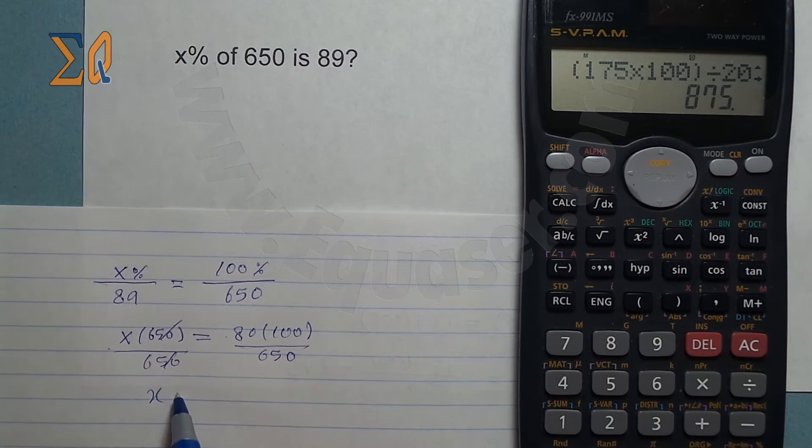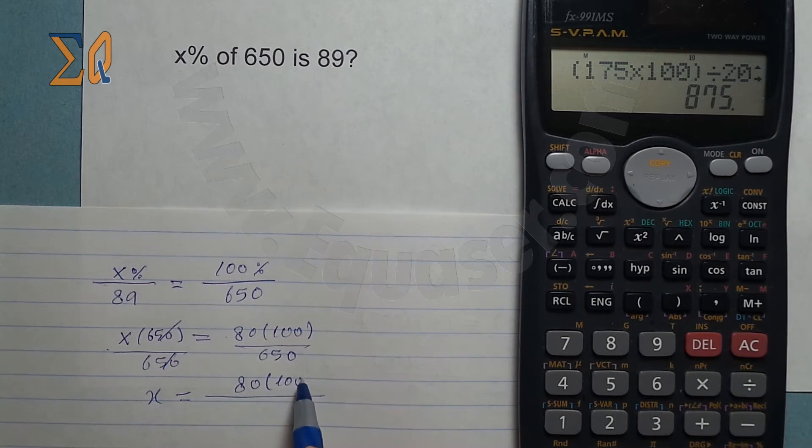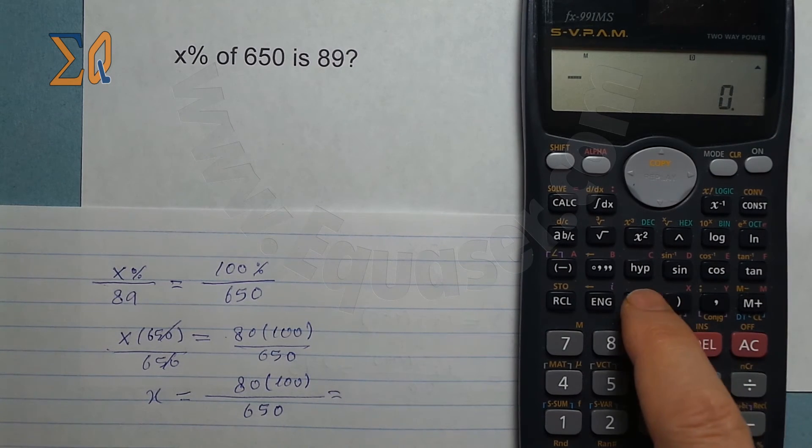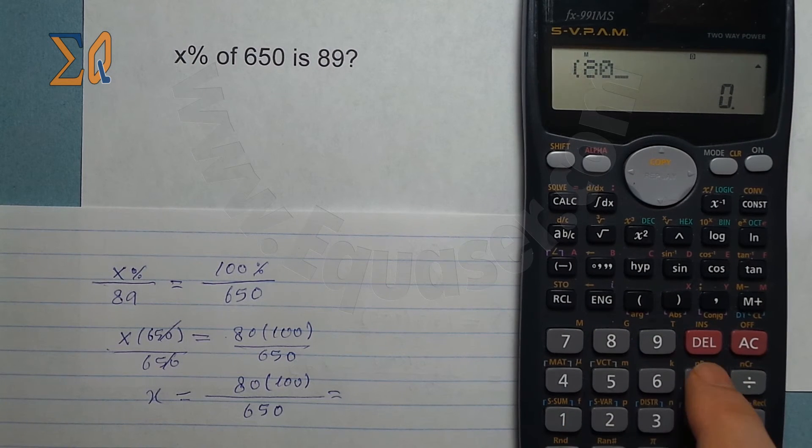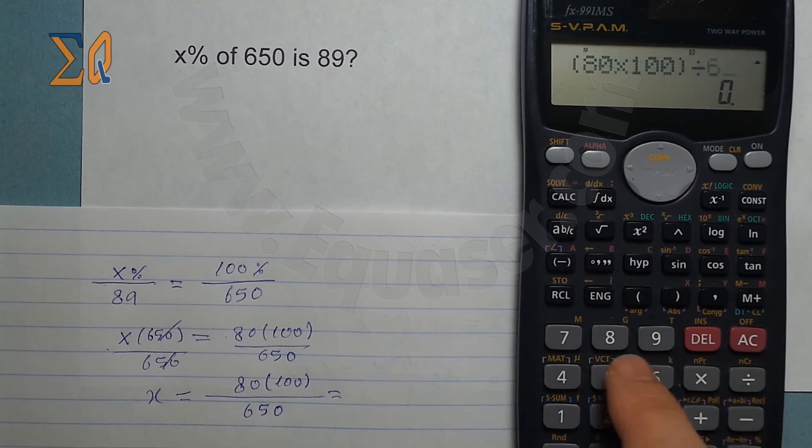This cancels, so X equals 89 times 100 divided by 650. Now let's use the calculator. Open up parenthesis, 89 times 100, divided by 650.